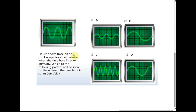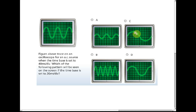The figure above shows a trace on an oscilloscope for an alternating current source when the time base is set to 40 milliseconds per division. Which of the following patterns will be seen on the screen if the time base is set to 20 milliseconds per division? First, one option must be wrong because only the time base changed — it does not change the Y gain. So the Y gain should be the same: two divisions up, two divisions down. That option is already eliminated.